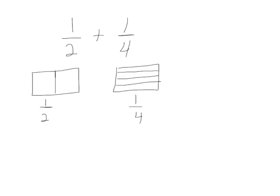Here we're showing rectangles, one which has one-half shaded and one that has one-fourth shaded. We want to be able to show them with the same units, so I'm going to take my rectangle that has one-half and divide it into fourths, and I'll take my rectangle that's divided into fourths and divide it in half. Now both my rectangles have eight units.